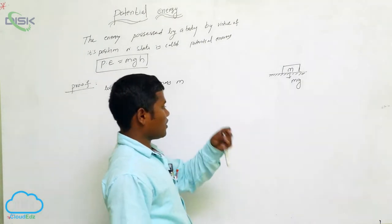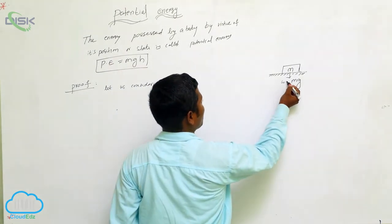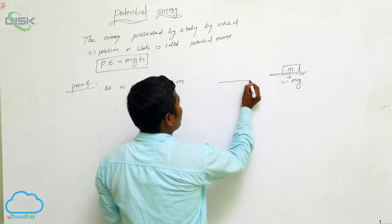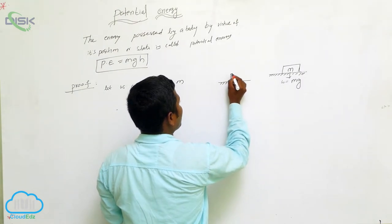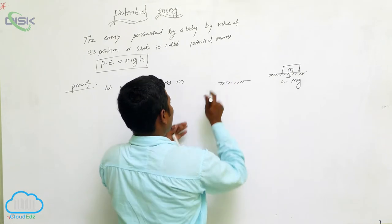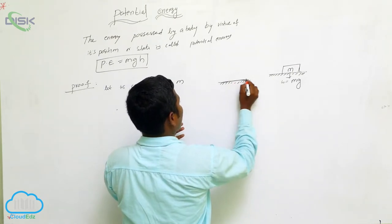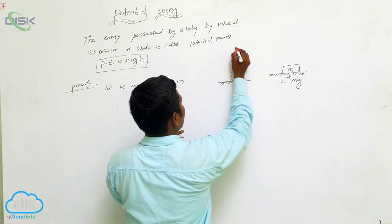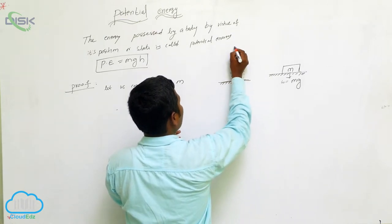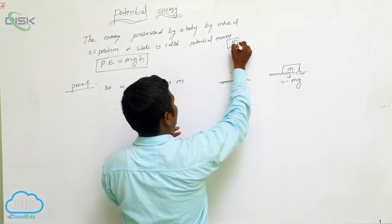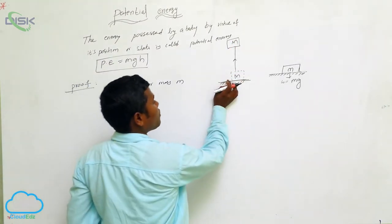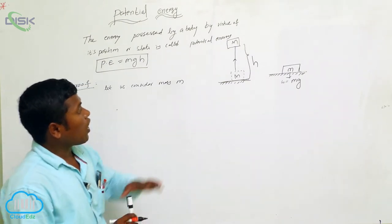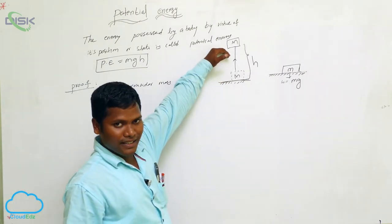This mass has weight. The weight W is equal to MG — you know this already. So I consider the mass lying on the ground. The weight W is equal to MG. Now I am lifting that mass from the ground to a certain height H.